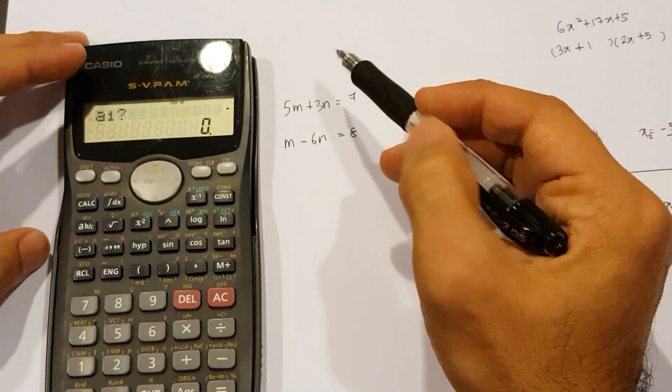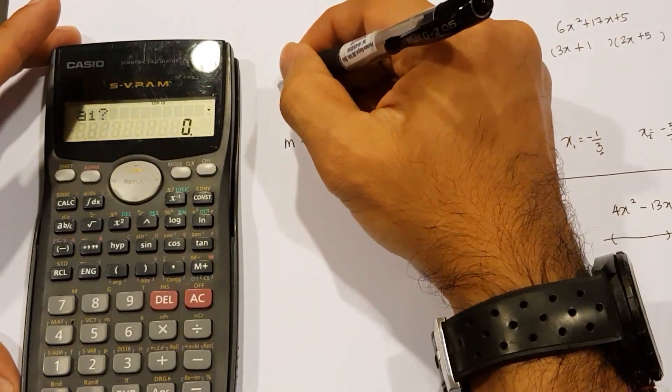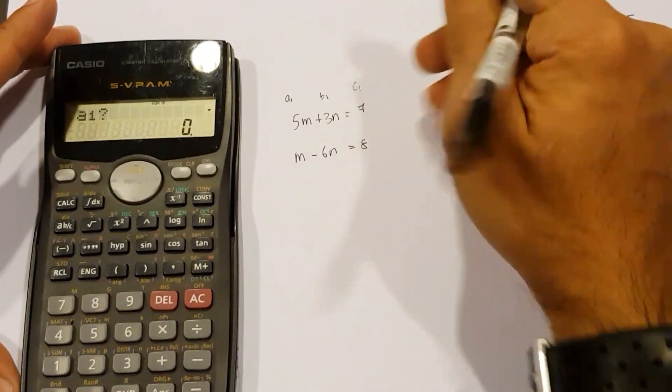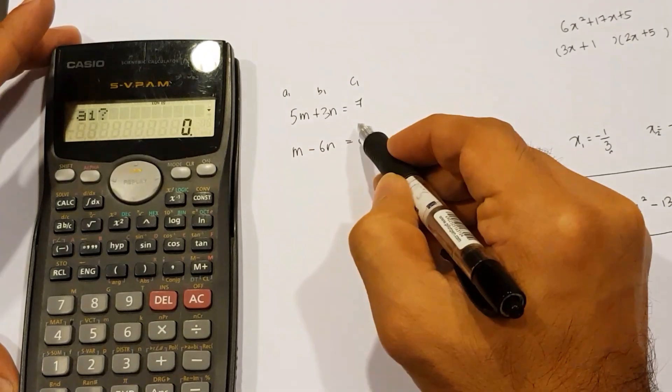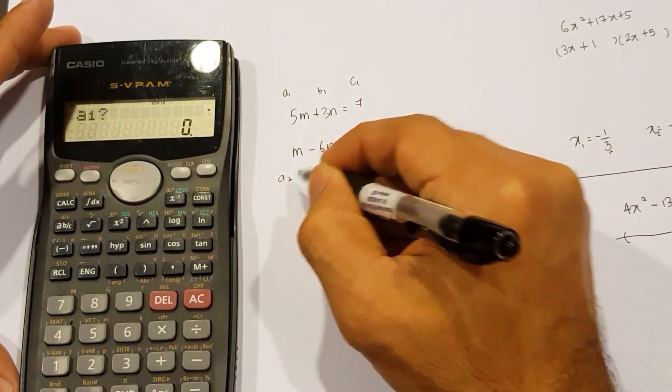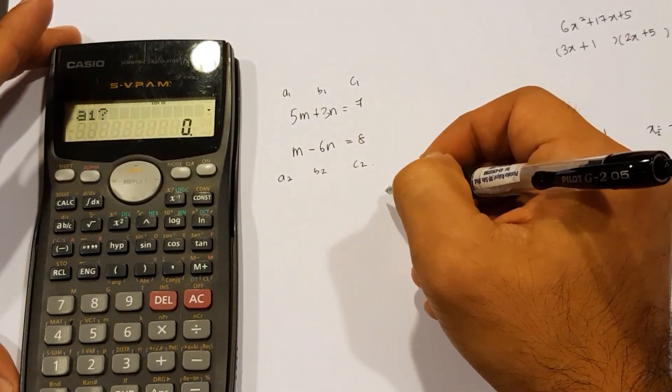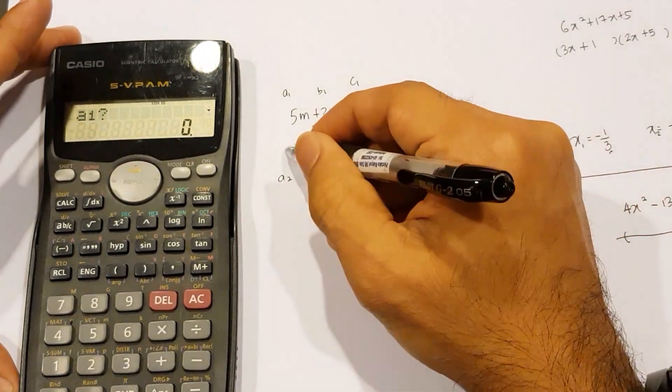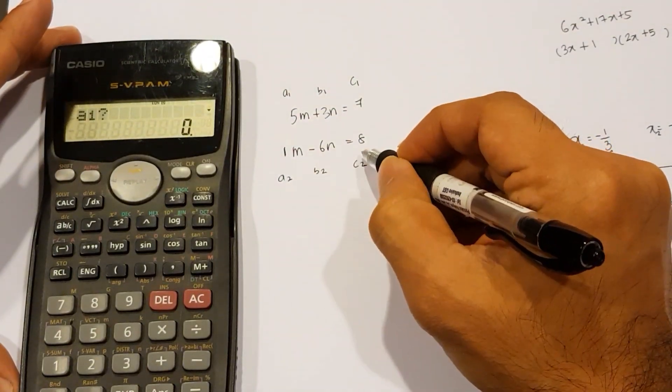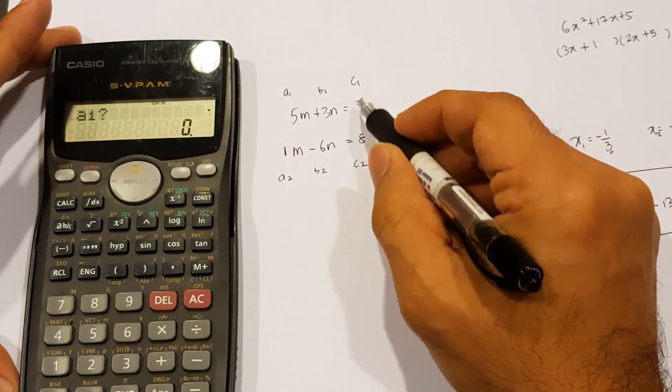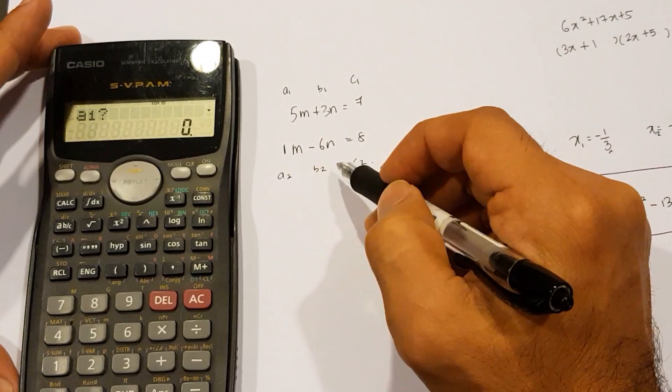Notice how we have got A1. That's because the first row, or the first equation, that means we have got A1, that's B1, and that's C1. In other words, A1 is 5, B1 is 3, C1 is 7, and likewise, I've got A2 for the second row, B2, and C2 for the second row. The A2 number here is, of course, by default, it should be 1, B2 number is negative 6, and C2 number is 8. Just bear in mind that we put the numbers on the right-hand side, whereas the numbers with the unknown, we put them on the left-hand side.